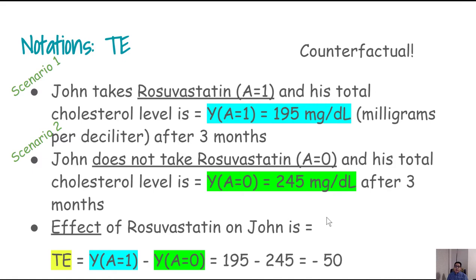Let me give a specific example so we can understand the potential outcome framework better. Understand that this framework is a conceptual framework — we are not really thinking about observing these outcomes directly. For example, consider a subject John who is taking rosuvastatin, meaning he is in the exposed group, A equal to 1. His potential outcome after a three-month period would be 195 mg/dL. Say he started follow-up in January 2020 and his follow-up ended in March 2020.